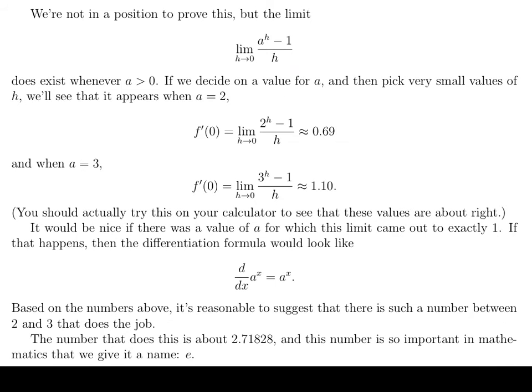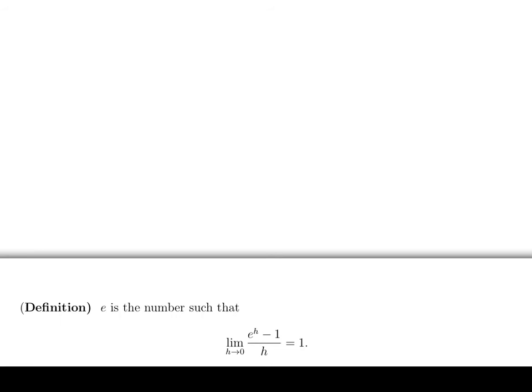Okay, so it turns out that the number that does this is about 2.71828. And this number, and it's just a number, it's so important in math that we actually give it a name. It gets its own letter, we're going to call it e. So from now on when you run into e, it's just this number. It's exactly the number that will make this limit, this limit here, come out to 1. So let's write that down as our definition of e. So we're going to define the number e to be the number that makes this limit come out to be exactly 1.